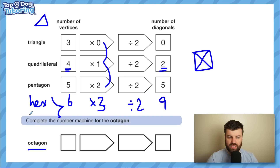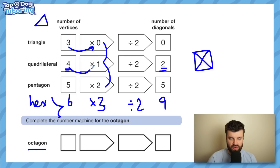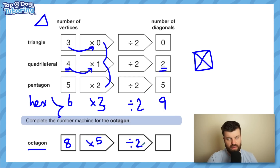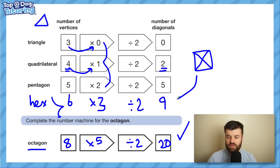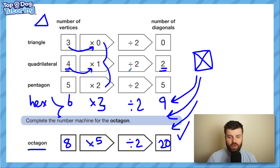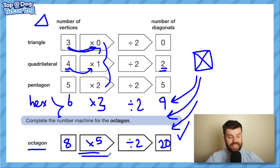We want an octagon. So you might think, I'll do a heptagon — a 7-sided shape — write it all out. Stop. Did you spot the shortcut? A triangle is 3, so we multiply by 0. A quadrilateral is 4, so we multiply by 1. We multiply by 3 less than the number of vertices. An octagon has 8 vertices, so we multiply by 5. Divide by 2 stays the same. So 8 times 5 is 40, divided by 2 is 20. You get the mark. If you can form an almost algebraic equation to spot the link between vertices and the multiplier, it rewards you with a quicker answer.